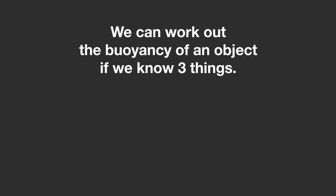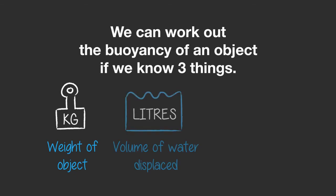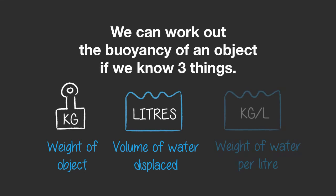We can work out the buoyancy of an object if we know three things: the weight of the object, the volume of the water the object displaces, and how much that water weighs — so the weight of the water per liter.